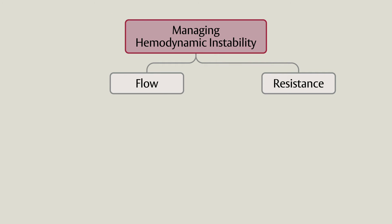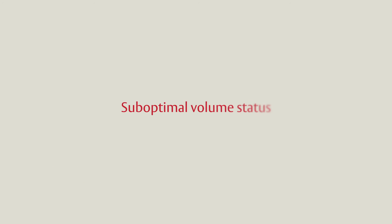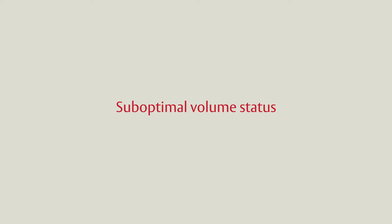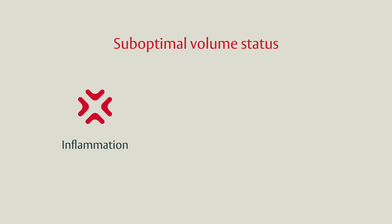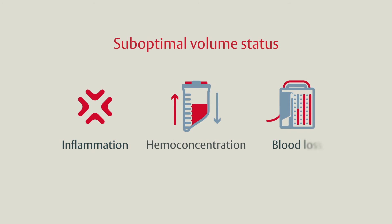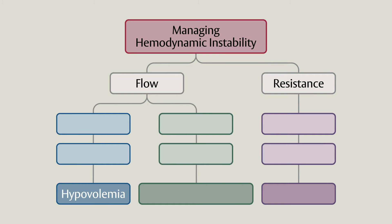Now, let's look at how advanced hemodynamic parameters can guide clinicians through the identification and management of common causes of hemodynamic instability in cardiac surgery patients. One of the most common underlying causes is suboptimal volume status. It is common for patients to experience frequent fluid shifts due to the post-surgical inflammatory state, cardiopulmonary bypass hemoconcentration, and ongoing blood loss from the surgical field. This can be accurately recognized using dynamic advanced parameters such as stroke volume and stroke volume variation.